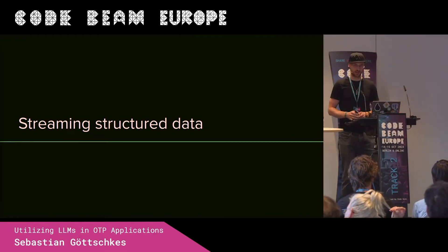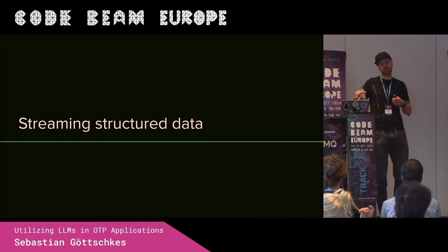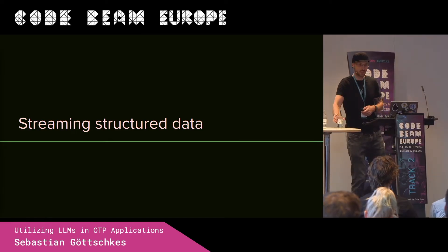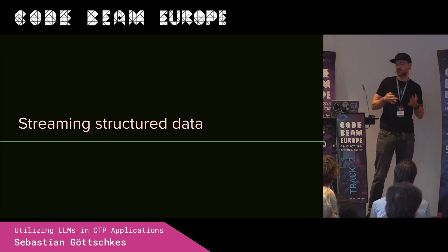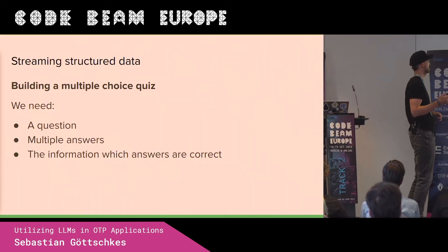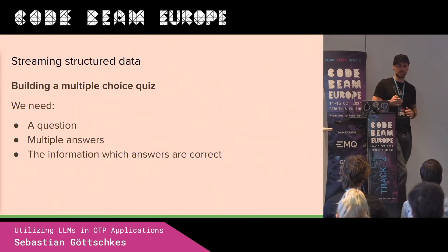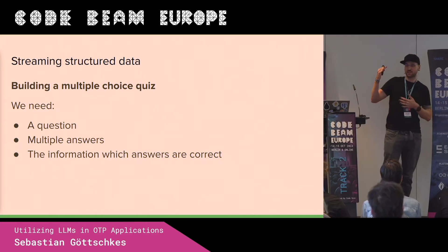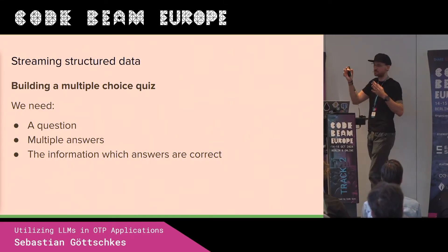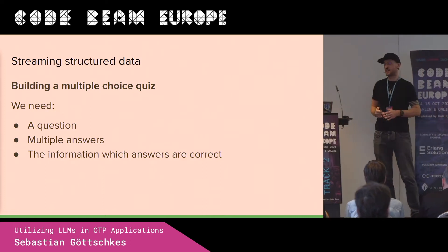Now you're adding a feature to your app and you want to stream structured data back to the client instead of waiting for the full result. If you do a chat completion with OpenAI you wait for the full result, which means the user has to wait five seconds or however long OpenAI takes to generate the response. Imagine a multiple choice quiz where you want a question, multiple answers, and which answers are correct. If you put all of this in one prompt, you have no way of knowing in your application what is the question and what are the answers, because the LLM will just write text and you won't be able to distinguish the fields automatically.